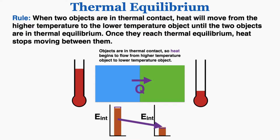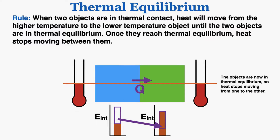It will continue to do this until the two temperatures are equal. The heat moving through specifically means that internal energy is moving from the blue object to the green object. The green object's temperature rises and the blue object's temperature falls, and this continues until the two temperatures are exactly equal. At that point they're in thermal equilibrium, and heat will stop moving from one object to the other.